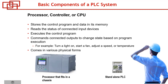The second function of the processor is to read the status of connected input devices. When we talk about the CPU or processor of a PLC, its main job is to hold the program you write into the PLC, and then read what's coming from the field — like temperature, pressure, level — or the status of a switch or device connected through input devices. The processor then executes that control program.